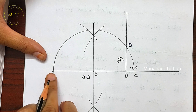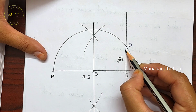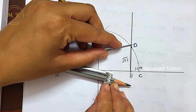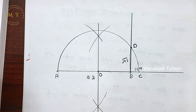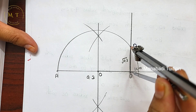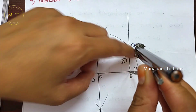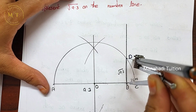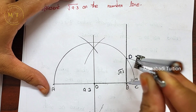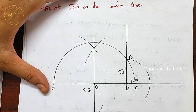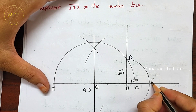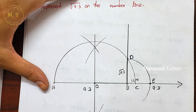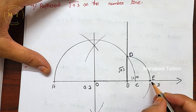Now take the number line. Using the compass, take the radius equal to BD, which is root 9.3. Rotate this radius from B on the number line to mark the point. That point on the number line represents the value 9.3 — so root 9.3 is now represented on the number line.